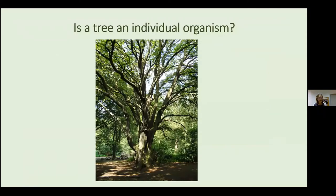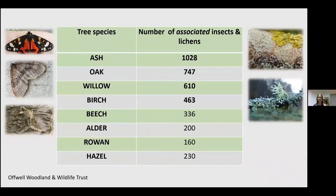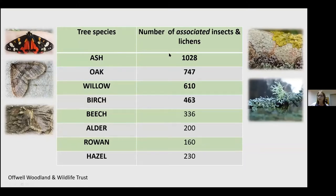What else about the role of trees — those habitat services? Is a tree an individual organism? Research from England, partly by the Wildlife Trust and the Offal Woodland and Wildlife Trust, has shown that native tree species each support hundreds of associated insects and lichens — species that prefer that tree in order to derive nutrients, shelter, and everything else needed to live. Looking at our European ash, it has 1,028 associated insects and lichens — and that doesn't even include mosses, fungi, birds, and other wildlife.